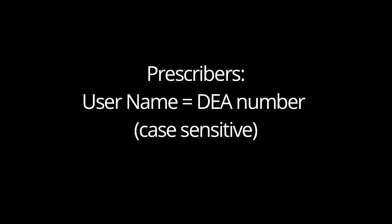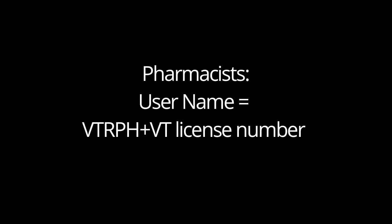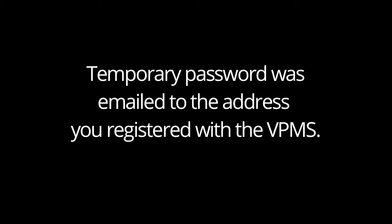If you are a prescriber, your username is your DEA number and is case sensitive. If you're a pharmacist, your username will be VTRPH and your Vermont license number. Your temporary password was sent to you in an email when you registered with the VPMS. You were then prompted to create a new password.